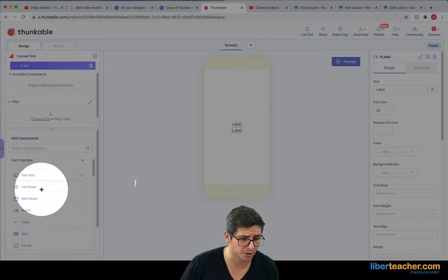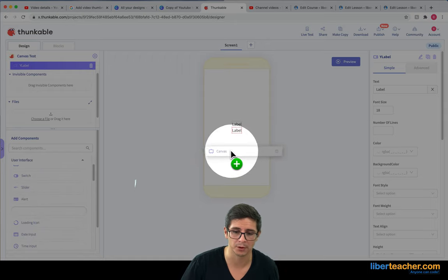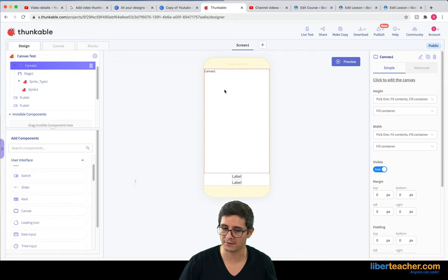Next I'm going to go ahead and throw in a canvas component. So I've got my canvas component here and my two labels below.